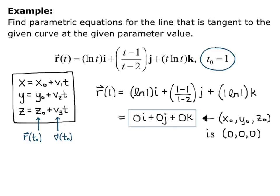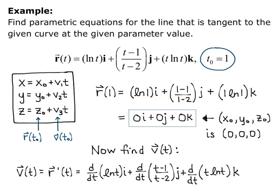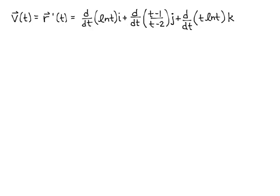Next, we want to find the velocity, and we know that v of t equals r prime t, so we take the derivative of each component individually. So first we want to do the derivative of natural log of t, and that is 1 over t. So that's going to be my i component of v of t. V of t equals 1 over t i.